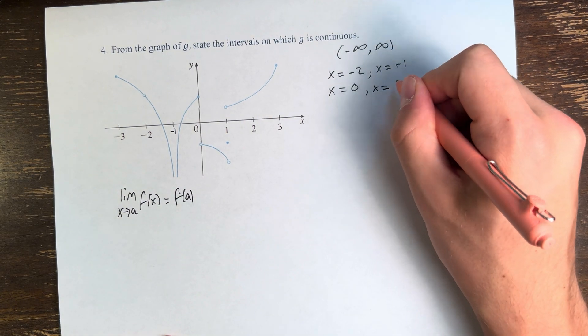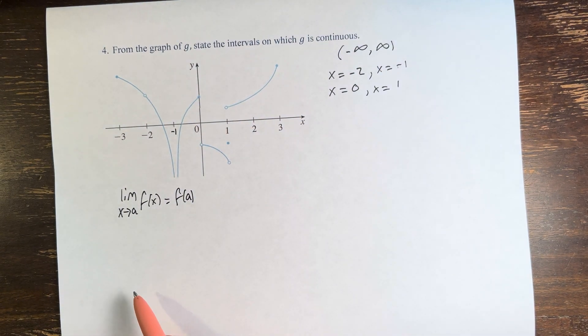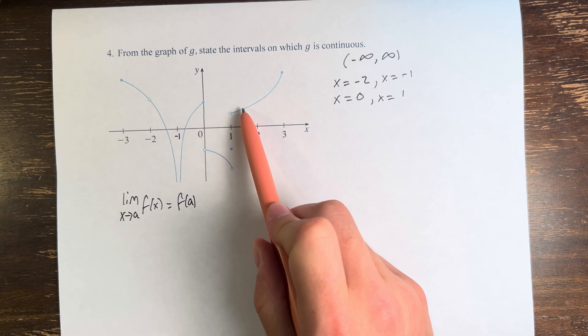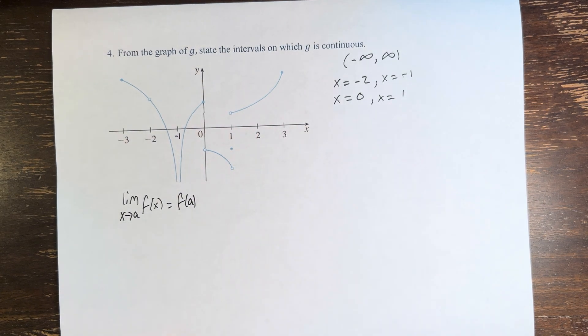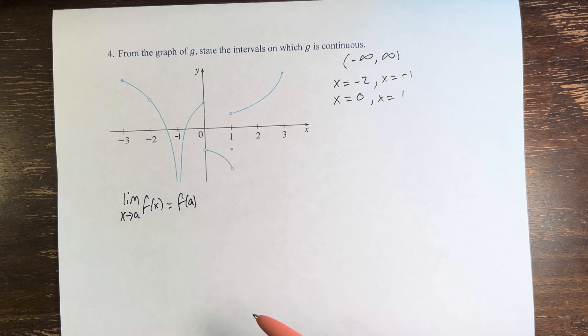And at x equals 1, not only is the function approaching two different values from the left and the right, but neither of them are even equal to the point. Not that it matters, because you only need one for it to be discontinuous.